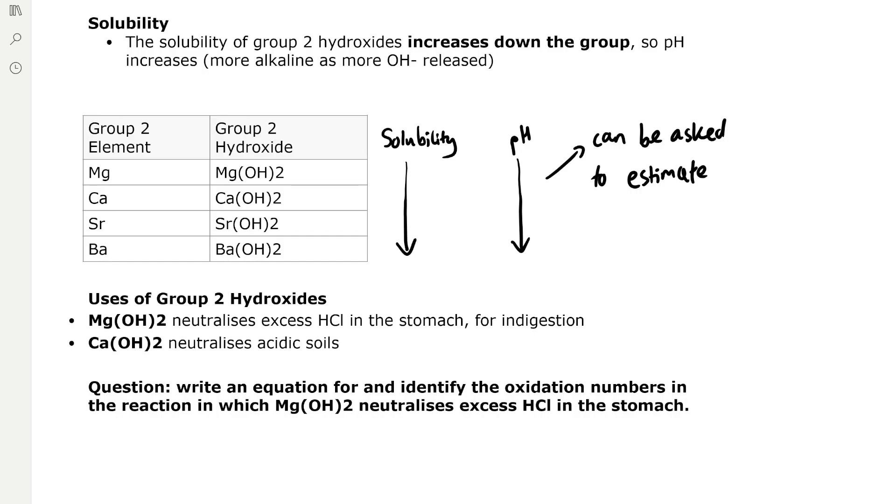For example, magnesium hydroxide is at the top of the group, so it's going to have a much lower pH, a less alkaline pH, closer to neutral. And barium hydroxide, much further down the group, is going to have a much higher pH because more hydroxide ions are released, so it's more alkaline. Barium hydroxide you might expect to be pH 13 or 14.